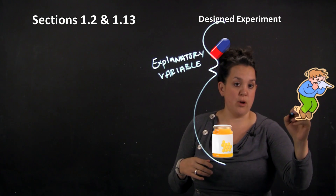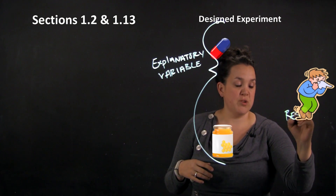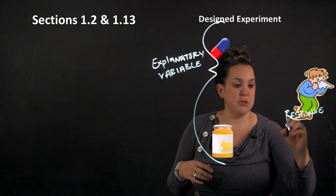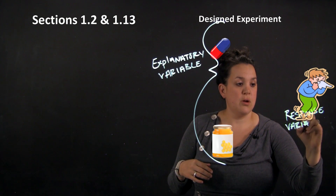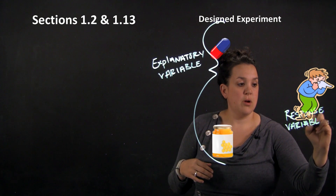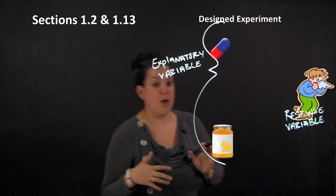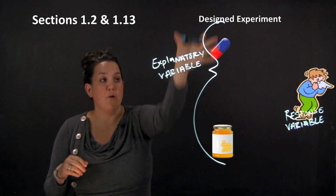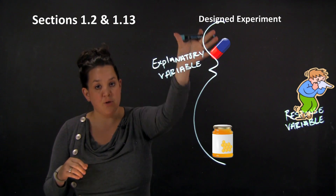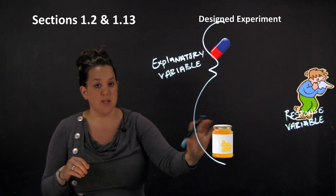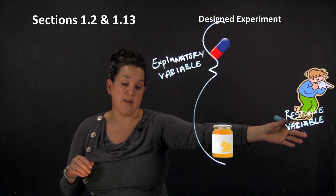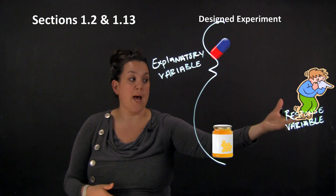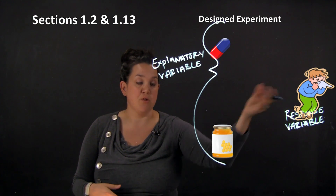We want to see if the type of treatment being received is going to affect what's called the response variable. The response variable here would be allergy symptoms. In this designed experiment, we're interested in whether the explanatory variable — the type of treatment received — is going to affect allergy symptoms, which is our response.